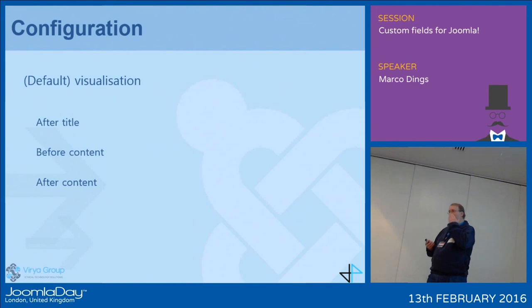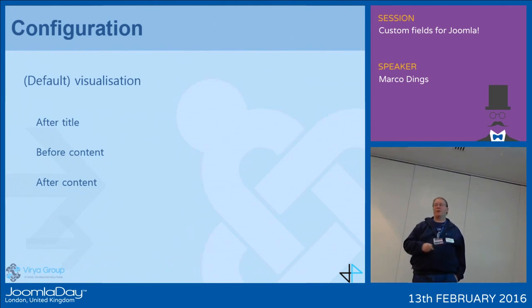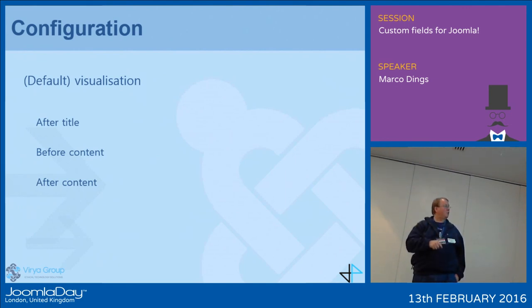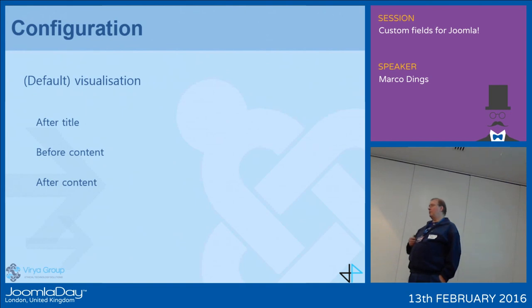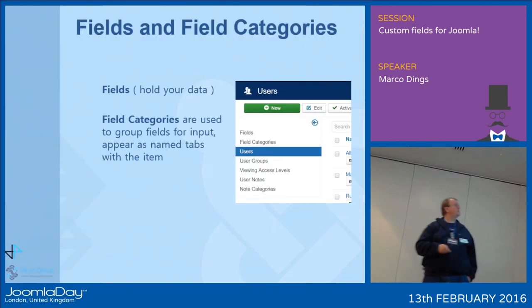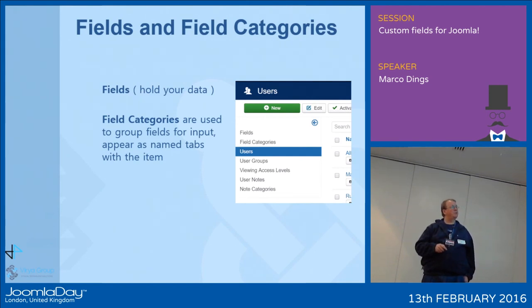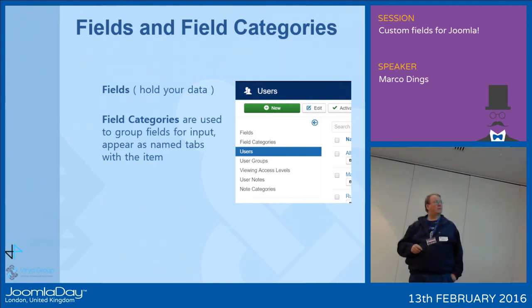By default, there are three places where content can be displayed: after the title — so you can add an author, an image, or any text after the title; before the content, so if it's an article it's just on top of the article text; or after the content. That already gives you some flexibility, while the real power comes when you go into your own template. What you then get — if you look at the users — are two extra items: fields and field categories. They appear at the top of the list.